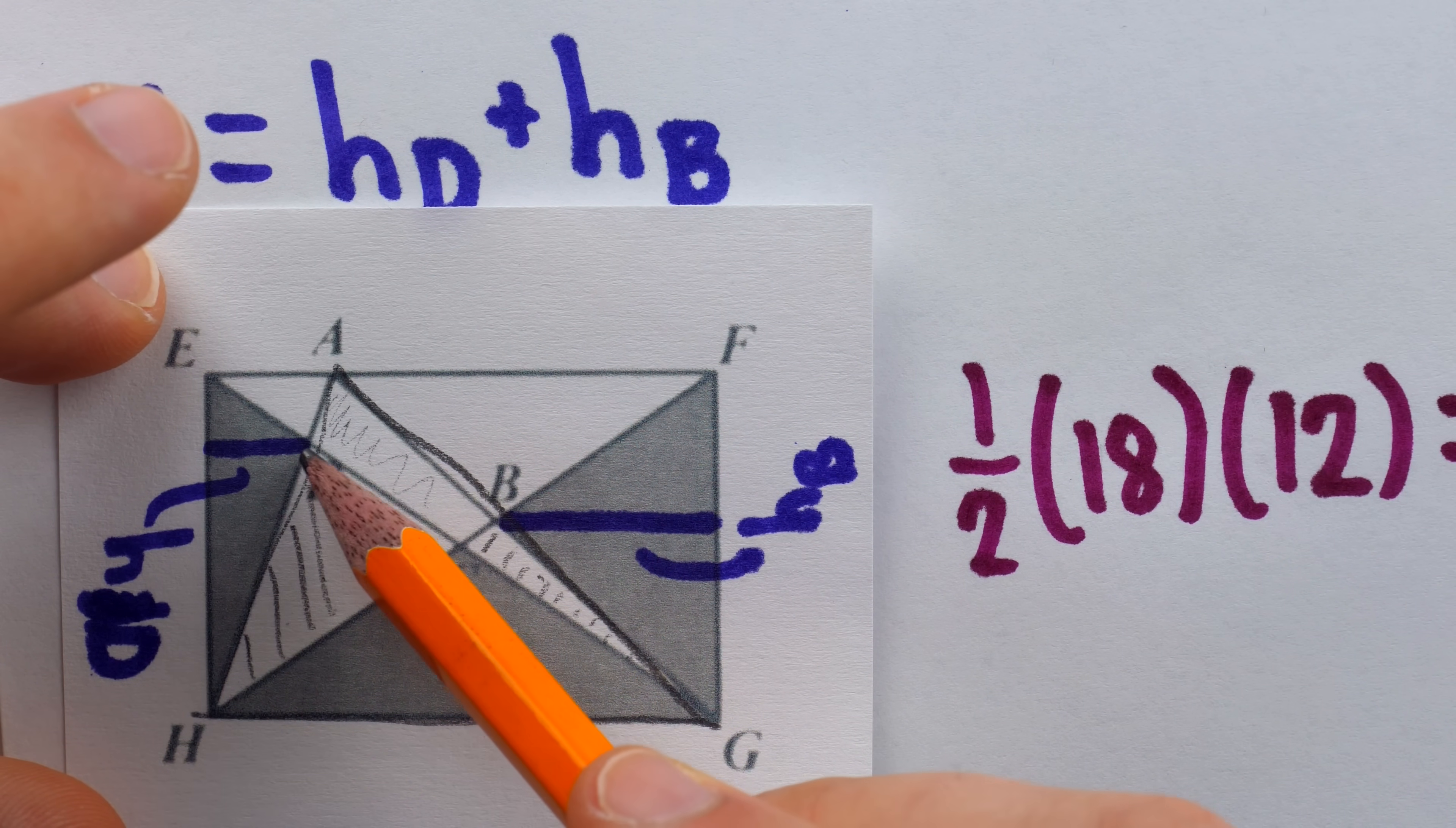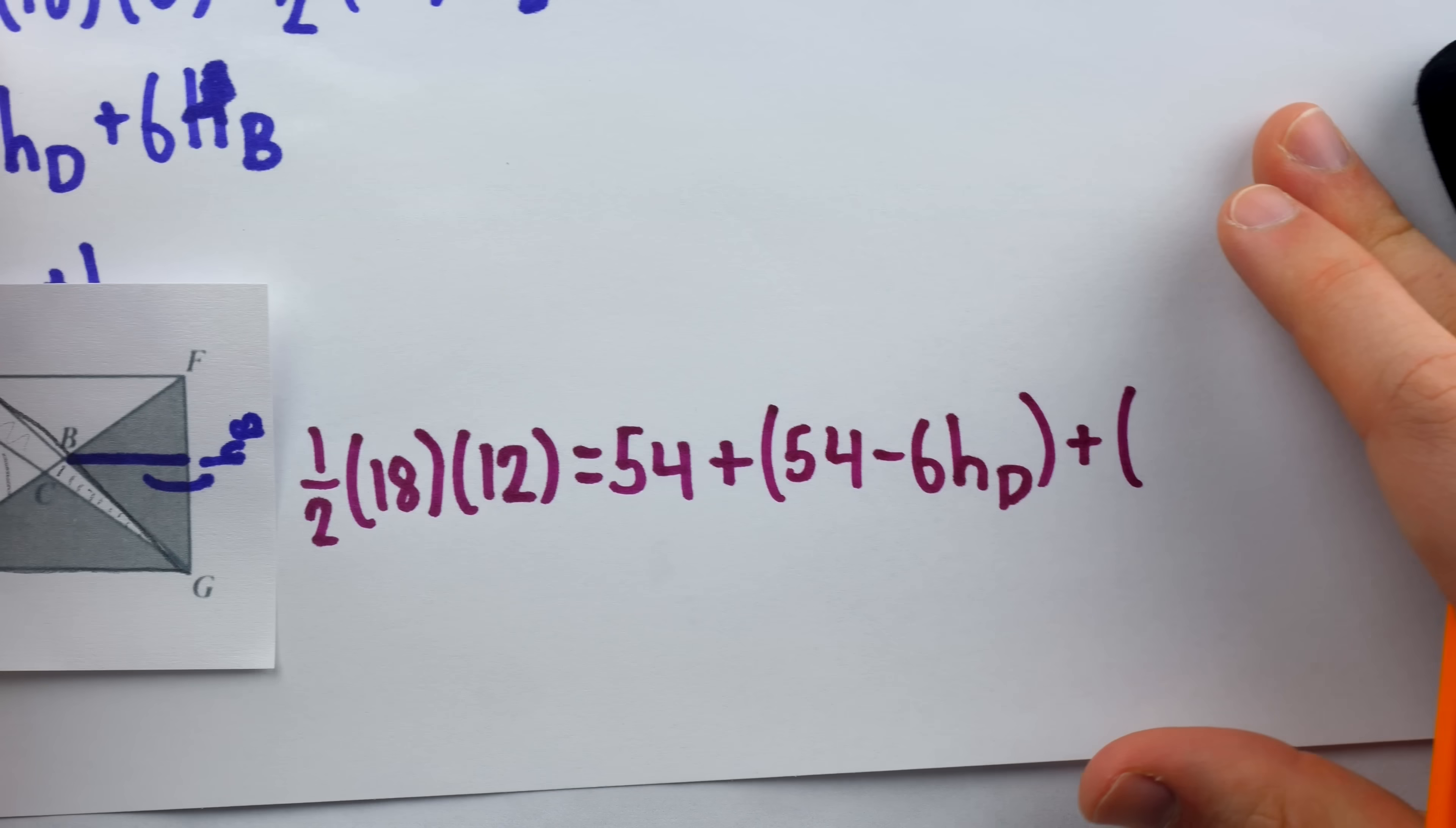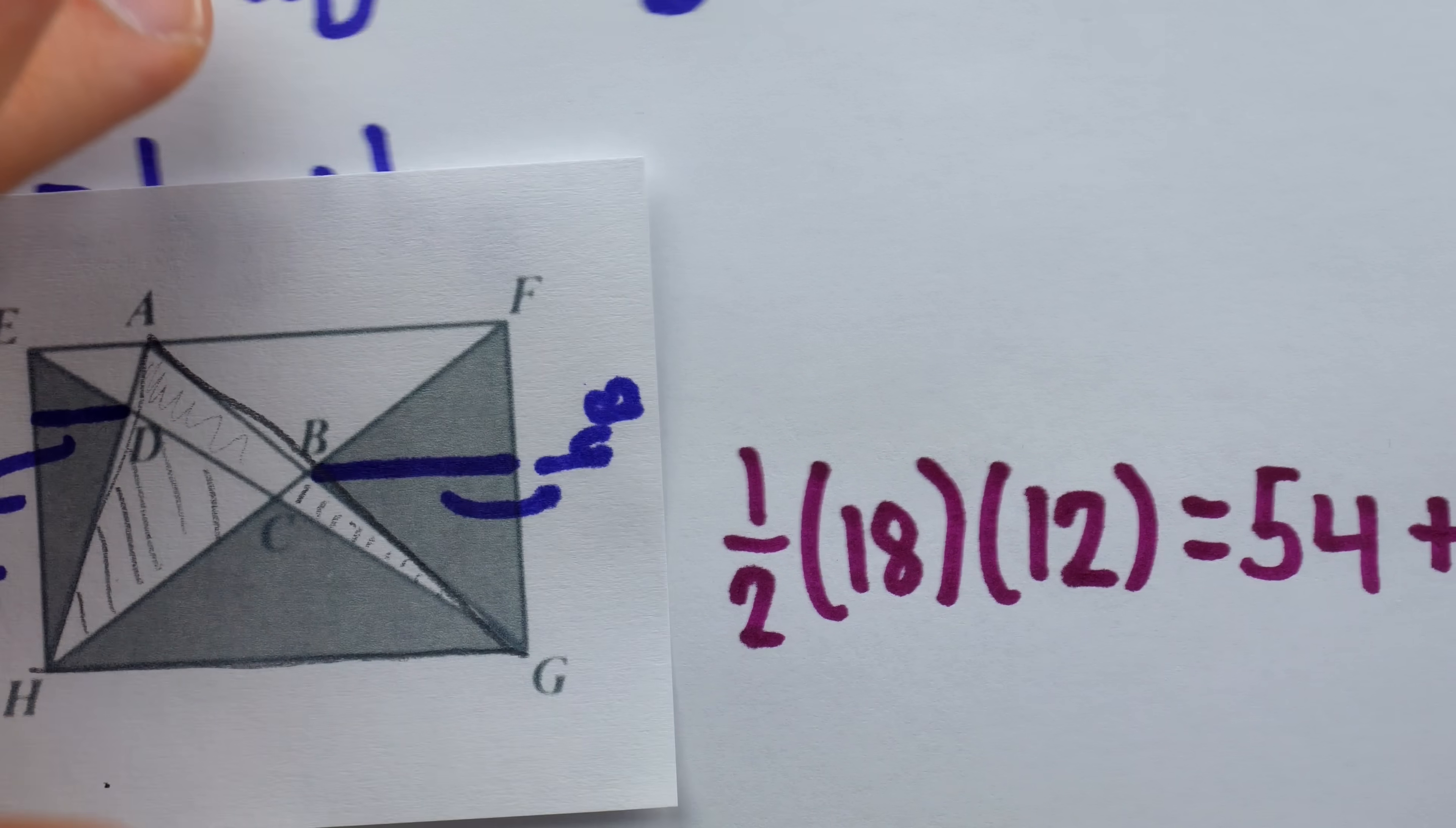And then, as we said, this penciled region HDC, that's 54, a quarter of the rectangle, minus 6h_D, the shaded region that's not included. So, 54 minus 6h_D. Then, we also have to include this unshaded sliver CBG, which again is 54, this quarter of the rectangle, minus the shaded part, 6h_B.